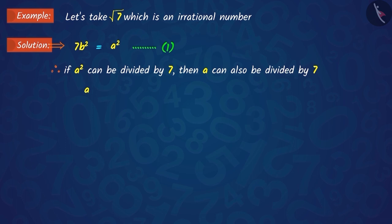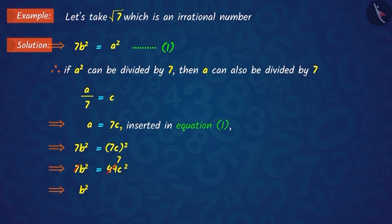Suppose when we divide a by 7, we get c as a quotient, where c is an integer. Putting the value of a in equation 1 and solving, we get b² equals 7c².